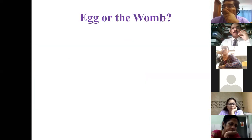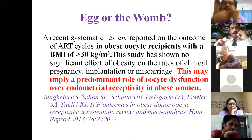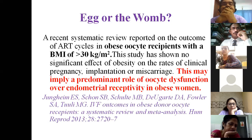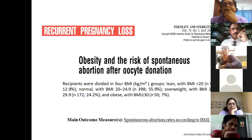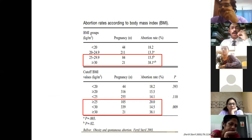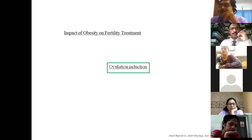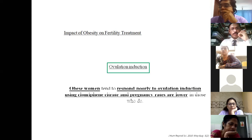The question is: which is to blame — the egg or the womb? Recent studies show that probably the egg is the culprit rather than the endometrium, as obesity affects egg quality more significantly. The only way to improve egg quality is through lifestyle changes. Even if the woman manages to conceive, there is significant risk of miscarriage and significantly lower live birth rate as BMI increases.